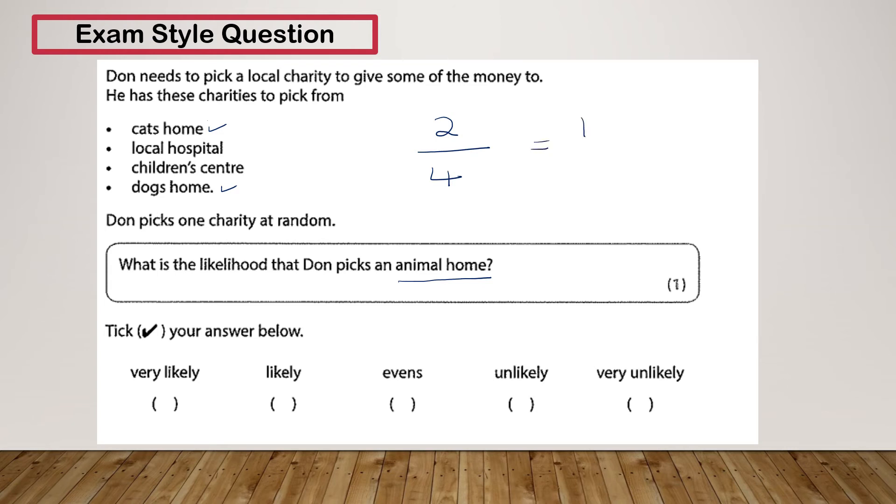So the likelihood that Don picks an animal home is two over four, which can be simplified to a half. Now as we know, a half is even chance, so 50-50.